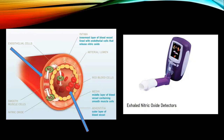Nitric oxide is also released by mediators in the immune and inflammatory response. As you can see here, this is an exhaled nitric oxide monitor, and we can use that to determine if there is inflammation going on in the airway — specifically to see if a patient's asthma is controlled.